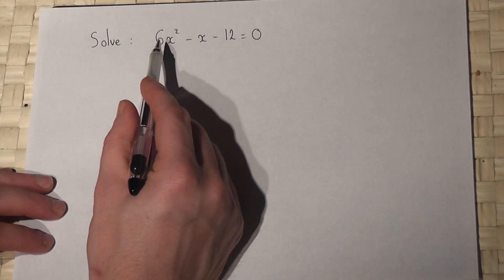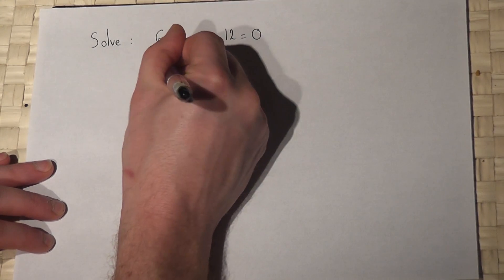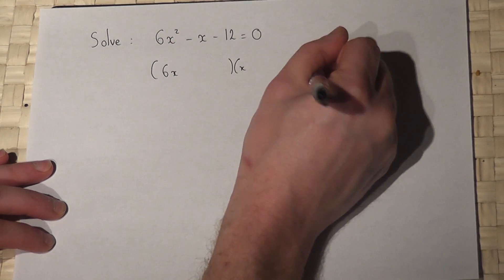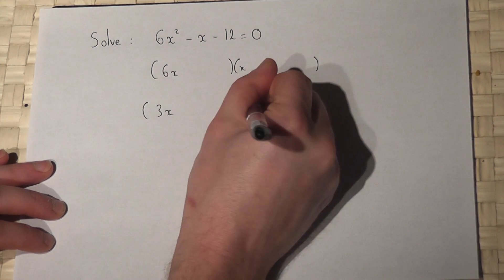Now then, to get 6x squared, the brackets must either be 6x and x, or 3x and 2x.